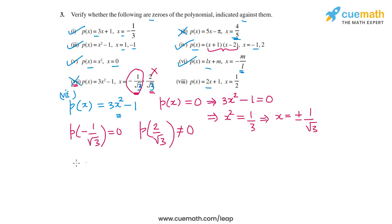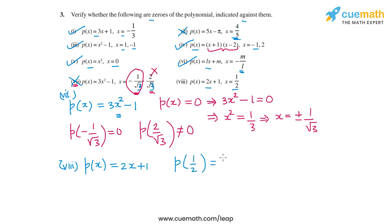Finally, part 8: p(x) = 2x + 1 and the value given is x = 1/2. Substituting: p(1/2) = 2 × (1/2) + 1 = 1 + 1 = 2. So p(1/2) ≠ 0, meaning x = 1/2 is not a zero of p(x). In fact, the zero of p(x) is x = -1/2. So this question is done.